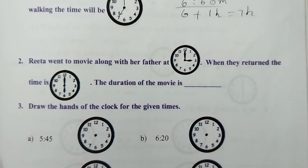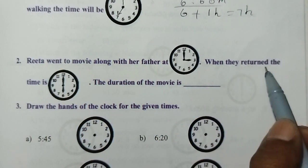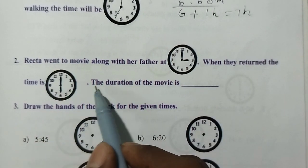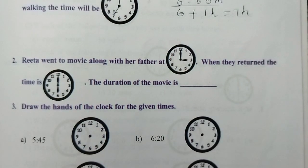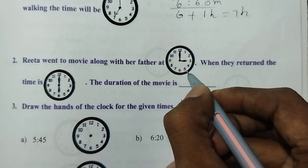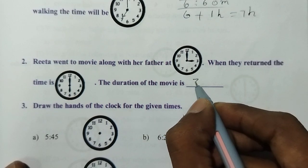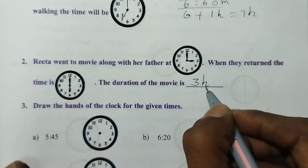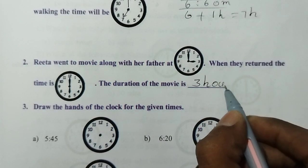Let's show you. Reta went to a movie along with her father at 3 o'clock. When they returned, the time was 6 o'clock. The duration of the movie is 3 hours.